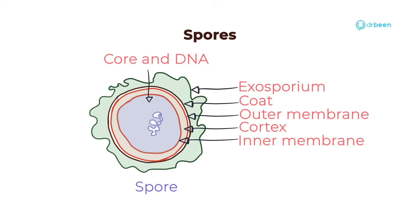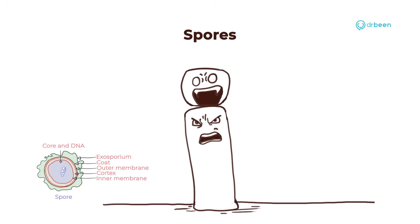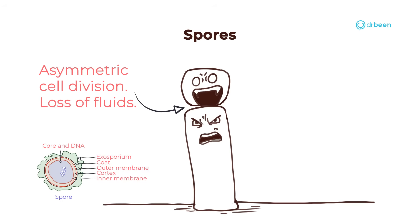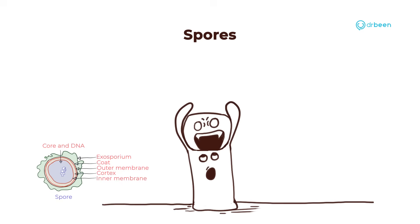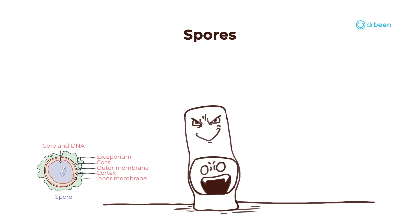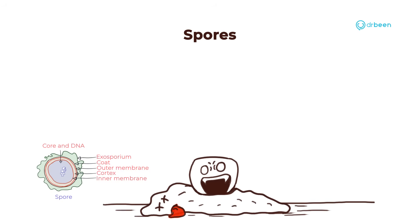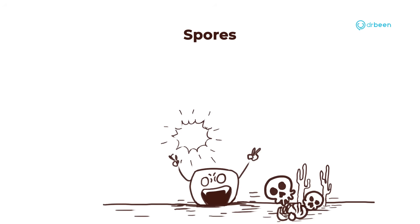We've mentioned spores a lot, so let's talk about them. Bacillus anthracis can form spores — it loses its fluid and develops a hard coat around itself. This spore is then engulfed by another Bacillus anthracis, and when the outer pathogen dies, the spore comes out. These spores can survive for decades in harsh environments, resisting heat, drying, and ultraviolet rays.